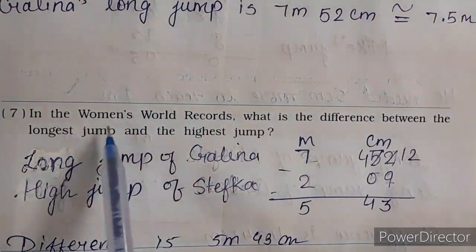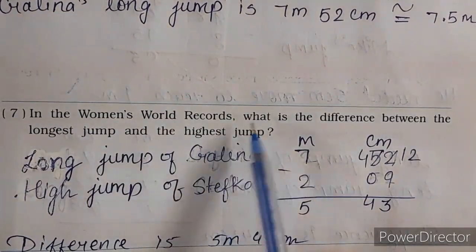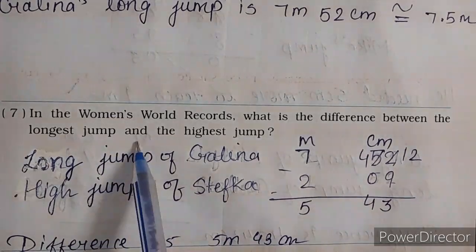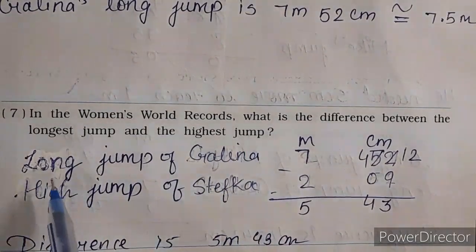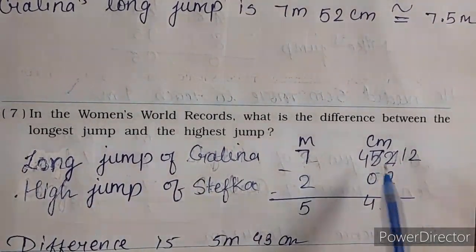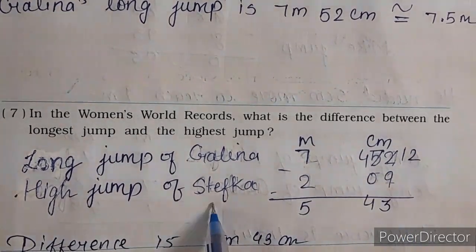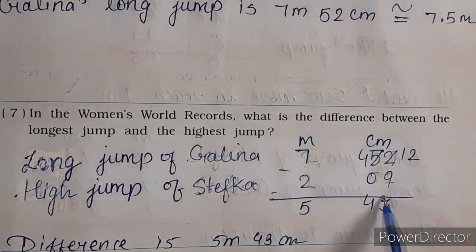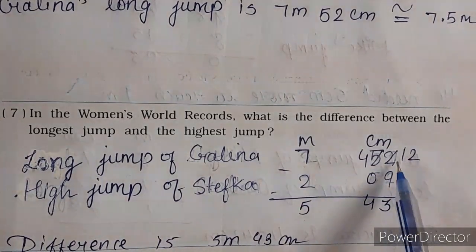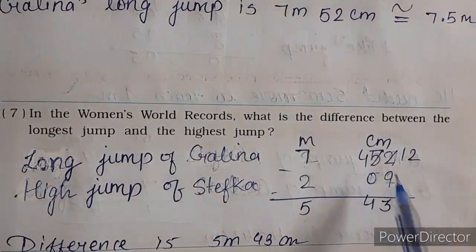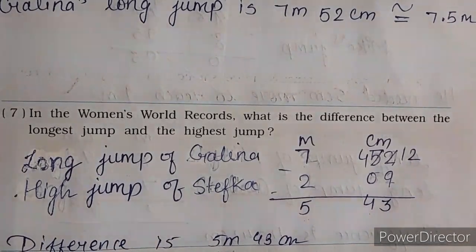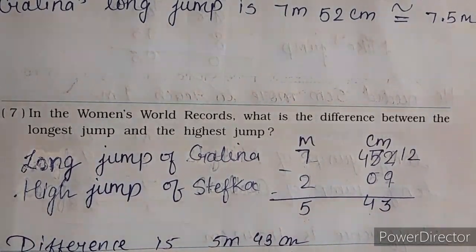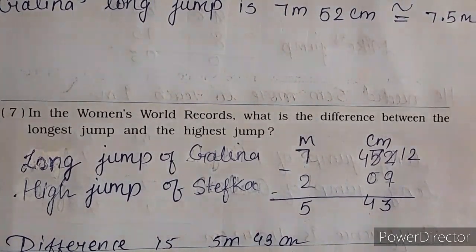In the women's world record, what is the difference between the longest jump and the highest jump? World record mein longest jump aur highest jump mein kya difference hai ladies mein? Long jump Galena ki hai — 7 meter 52 centimeter. And high jump Stefka ki hai — 2 meter 9 centimeter. Minus karenge: 12 mein se 9 jayega 3 — wait, solving: five, four, five — difference nikla 5 meter 43 centimeter. Aaj hum yahin tak rakhenge, next video mein hum complete kar denge. Thank you.